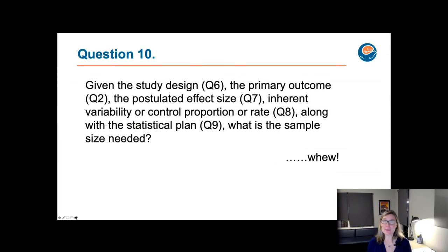Question 10. So this is putting it all together. So given the study design, which is your answer to question six, the primary outcome, which is your answer to question two, the postulated effect size, which is your answer to question seven, the inherent variability or control proportion or rate, which is the answer to question eight, along with the statistical plan, question nine, what is the sample size needed? So that actually puts a lot of pieces together. So when people ask you how many people you need for your study, you can see that there's a lot of fundamental questions that you have to ask yourself and your team has to figure out before you can estimate your sample size. And each one of these pieces is really critical for that. So it kind of just takes you back to all the other parts of the question so you can answer this one. So with that, I'll stop and you can pick up in part two. So thank you.